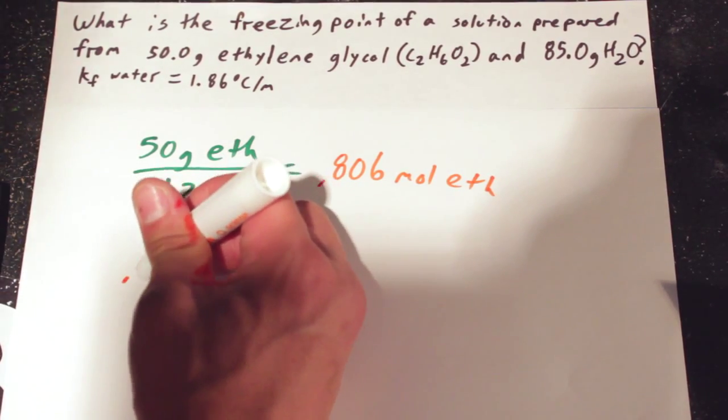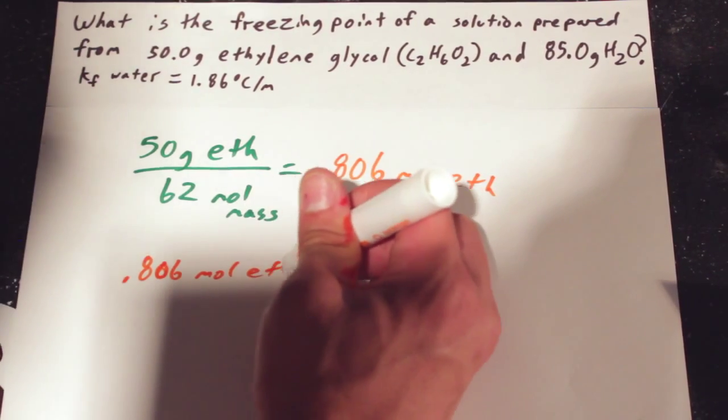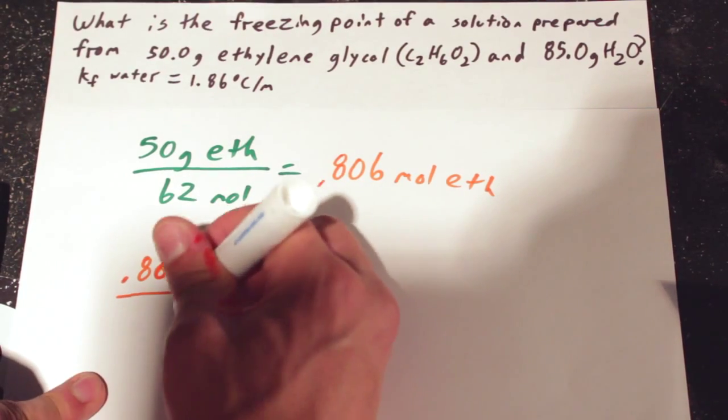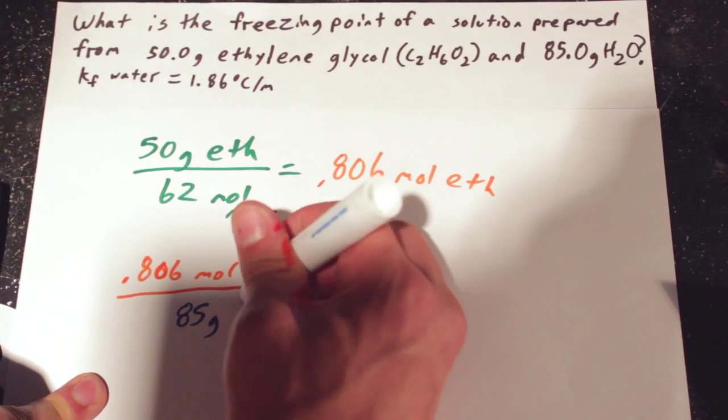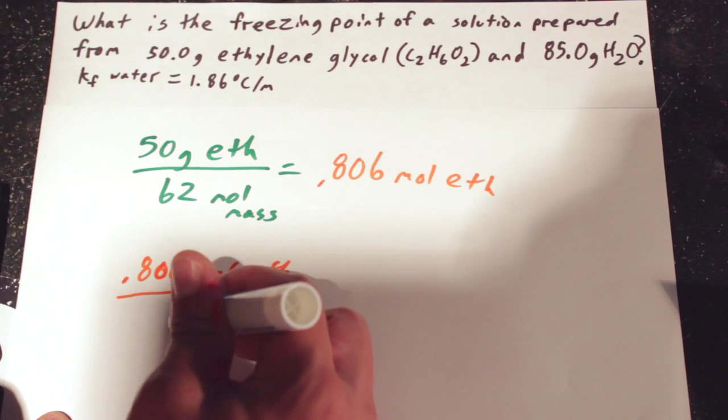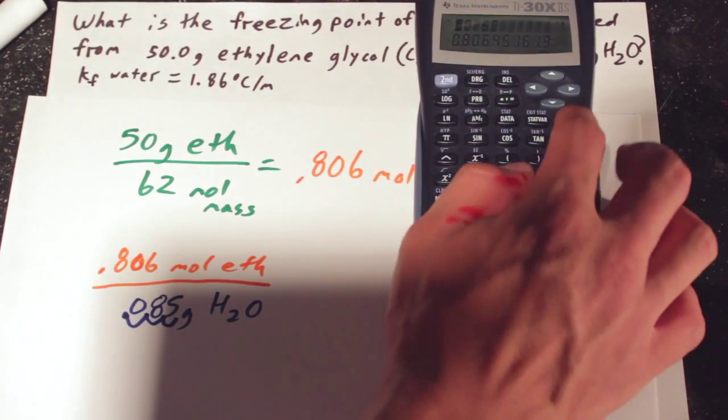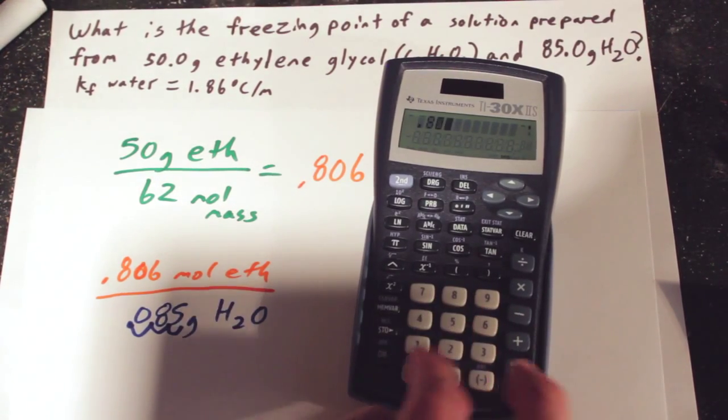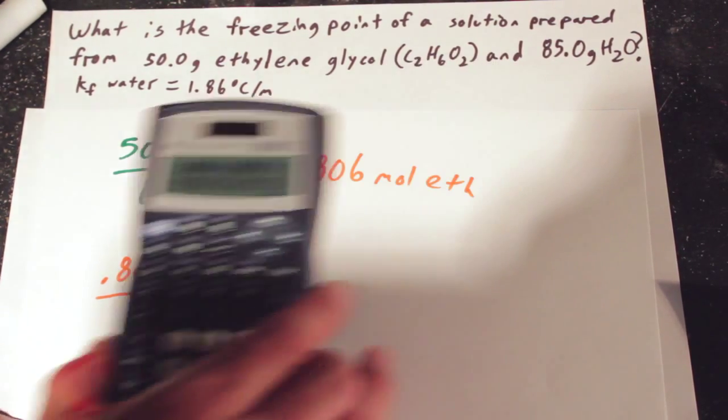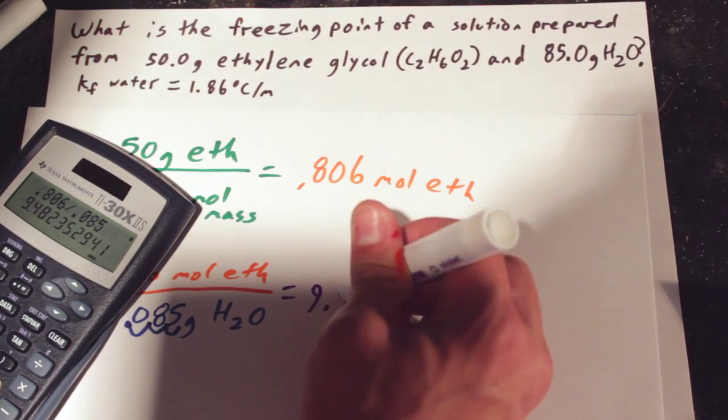Now we're going to put this 0.806 moles of ethylene glycol over the mass of the solvent, which is water, which is 85 grams H2O. And we actually have to convert this grams to kilograms, so move the decimal place three places over.